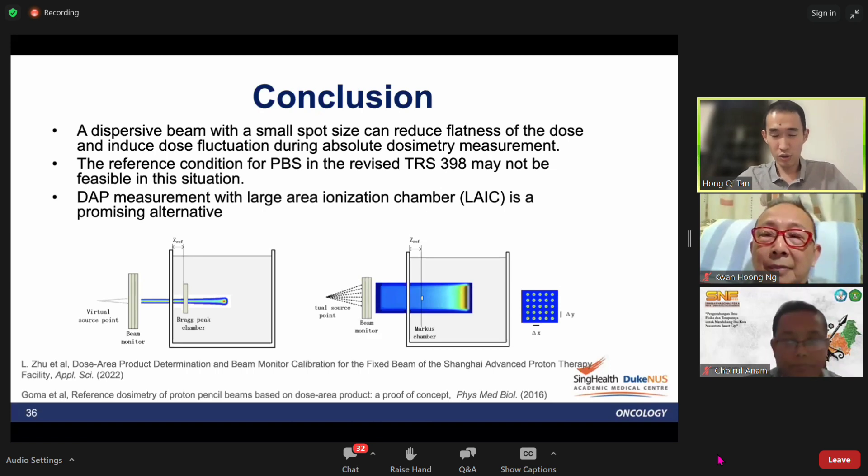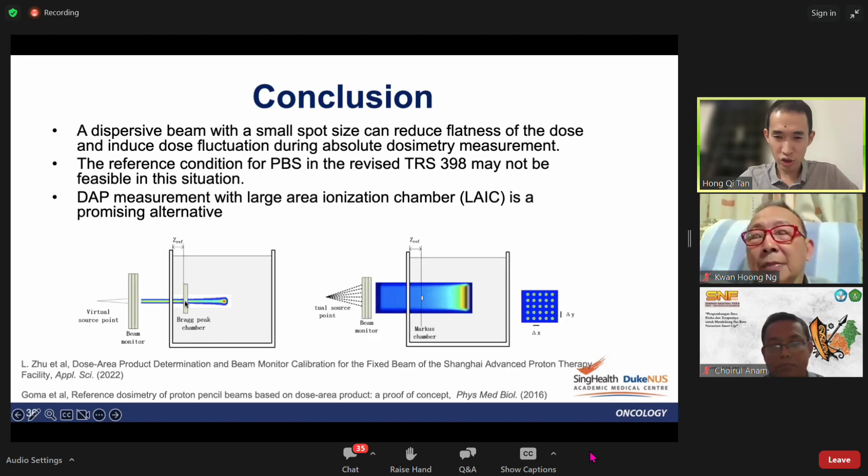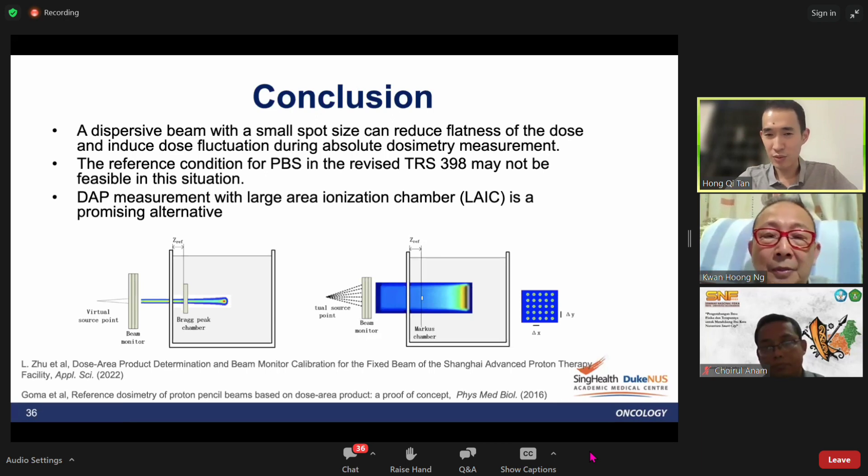Several research groups show that it's possible to do dose area product measurements using large area ionization chambers. There's a couple of work out there, and as shown here, ideally you need reciprocity conditions. These two conditions should give very similar DAP measurements. With a practical chamber with a single spot, the good thing is it's insensitive to any spot positional drift. We think this will be a promising step forward to overcome this problem.